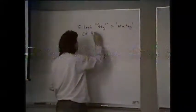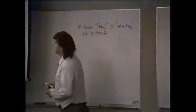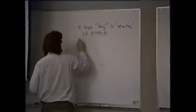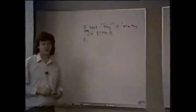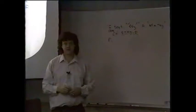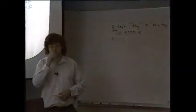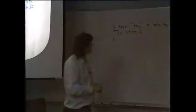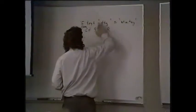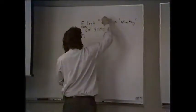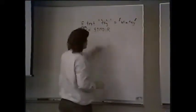If test TTY equals not a TTY, then CD to dollar TMPDIR, and then fi. That'll put NQS jobs into the temporary directory, and you don't have to put it in the job itself.